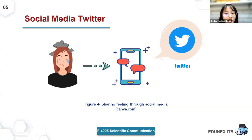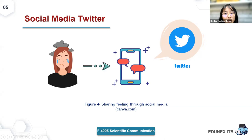Some people try to overcome the psychological impact of COVID-19 by sharing feelings through social media — for example, on Twitter. Twitter has become a social network used by millions as a medium to access and share information in real time. From Twitter, we can find out how people feel about COVID-19. But with millions of tweets, it would take a lot of work to process manually, so we need the help of computers. This is where we need sentiment analysis.